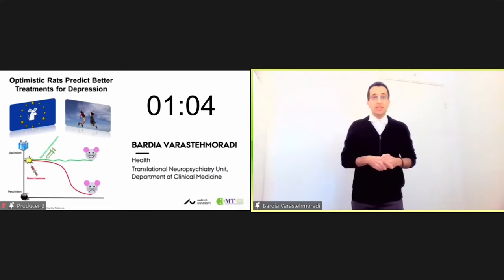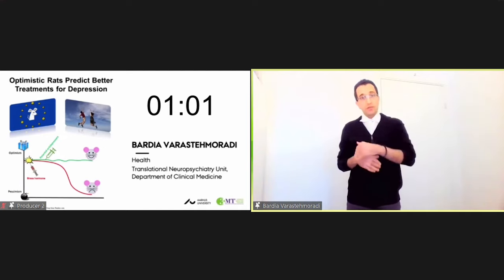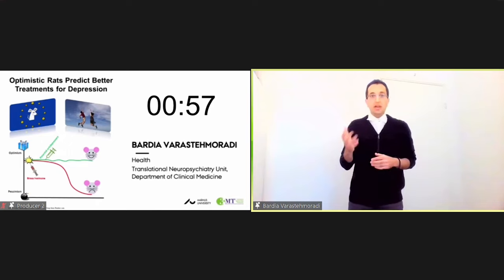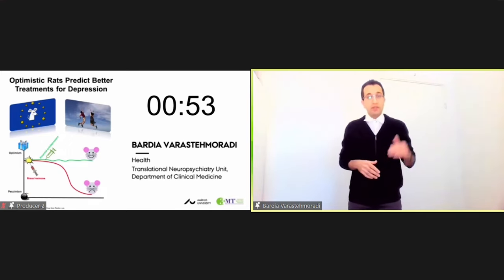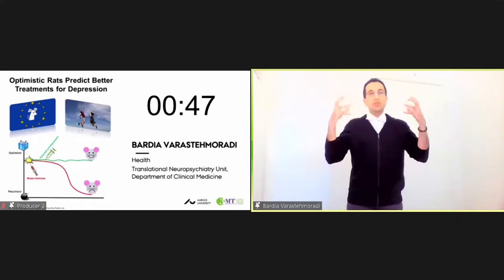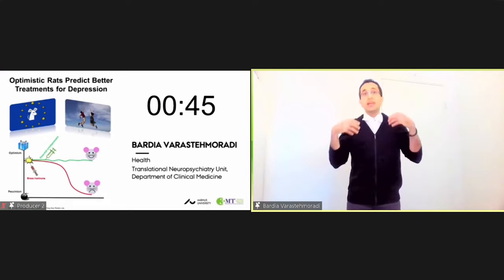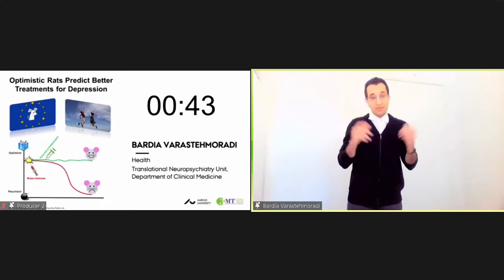Here in the graph, you can see when we inject the stress hormone - if you follow the red line - the animal shows kind of a pessimistic view. On the other hand, when we inject the drug, in this case the opioid-based drug, if you follow the green line, you can see that it blocks the negative feeling and actually stimulates the reward system and shows kind of an optimistic view.